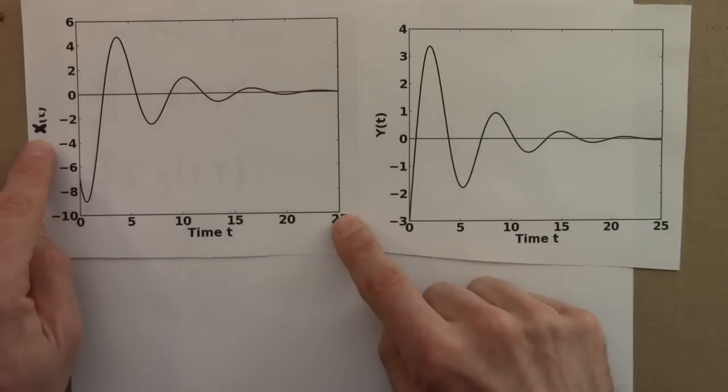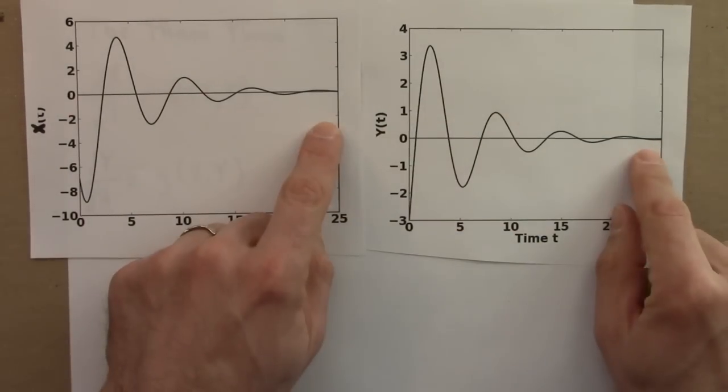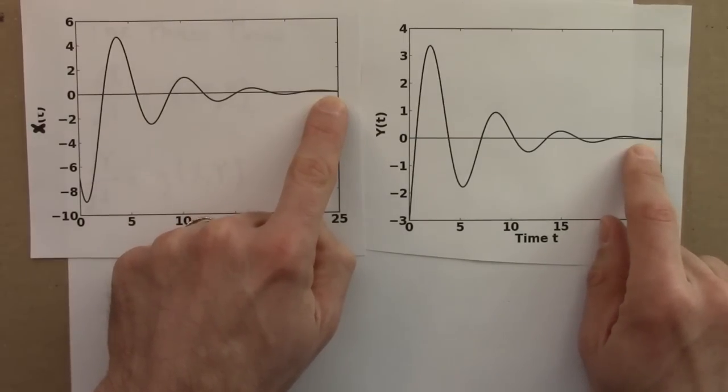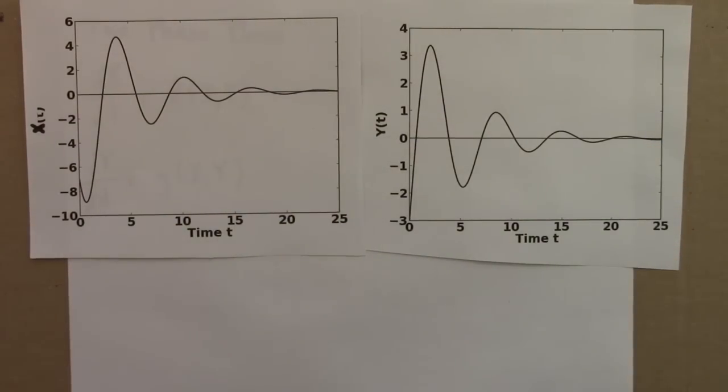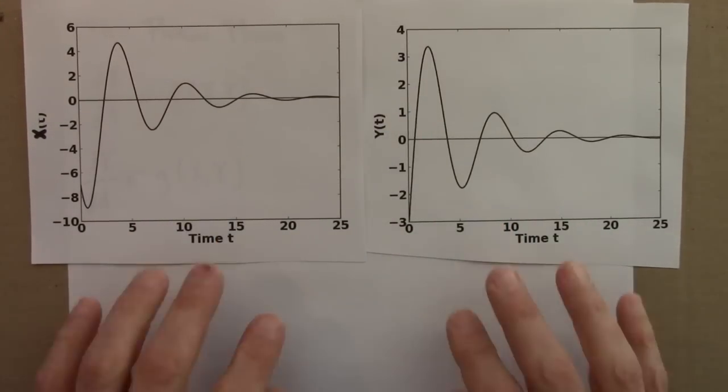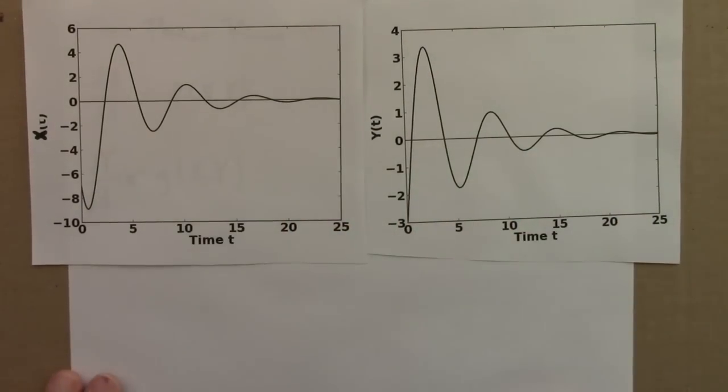So this is x of t and this is y of t. And they both wiggle and then they're approaching zero. So it looks like there's an attracting fixed point at zero. So let's think what the phase plane might look like for this. I'll try to do a rough sketch of this and then I'll show you the plot that I had a computer do.